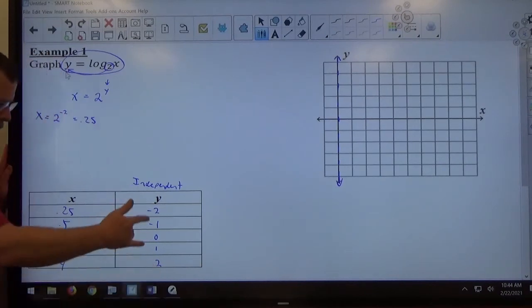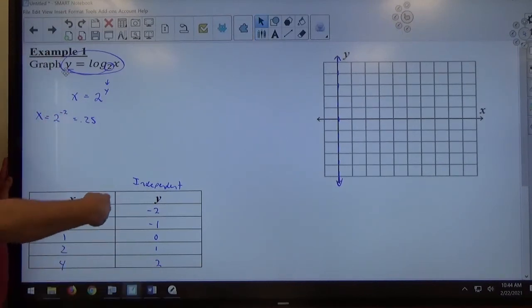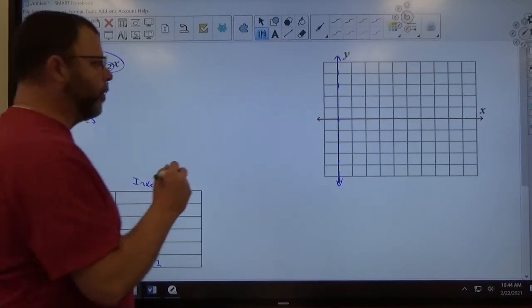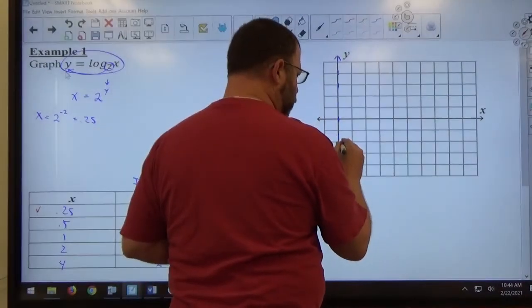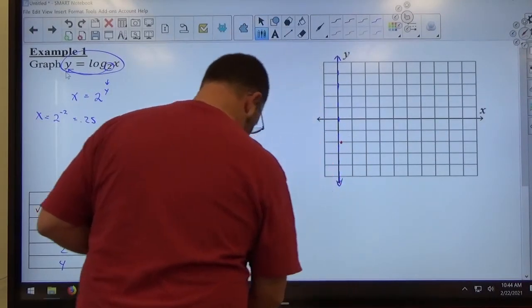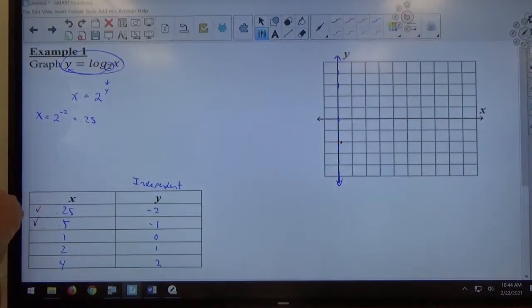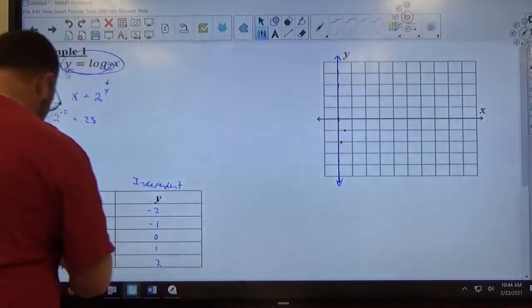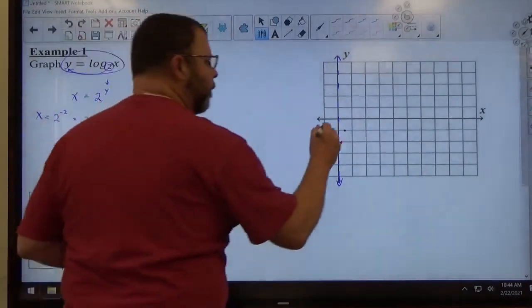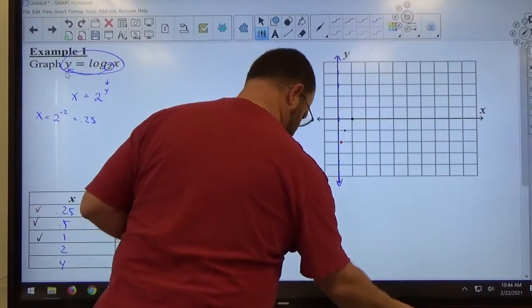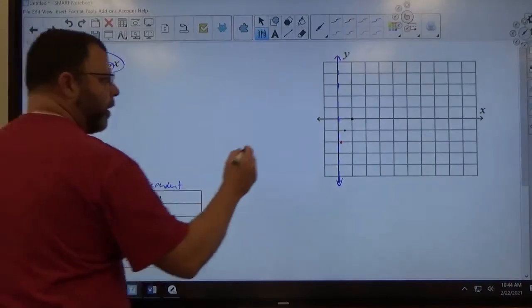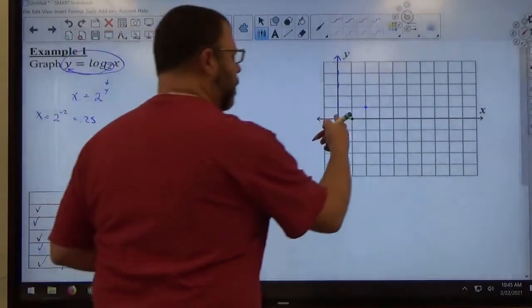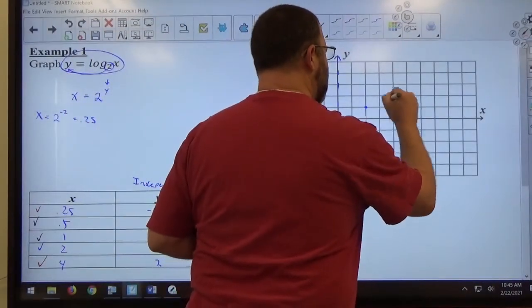Now, the points, even though I picked y and solved for x, I'm still plotting x, y coordinates to plot these points. So, if I'm plotting this point, 0.25 comma negative 2, that's one fourth over two down. And this point here, 0.5 comma negative 1 is one half over and one down. This point here, 1 comma 0 is one right, zero up or down. And the fourth point is 2 comma 1, two right, one up. And our final point is 4 comma 2, that's 4 right and 2 up. And those are the points we picked.